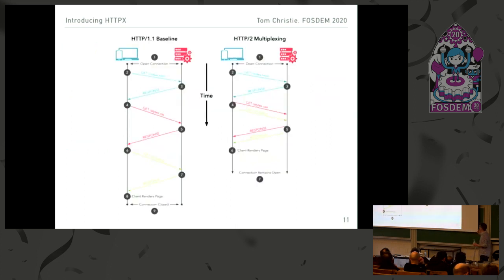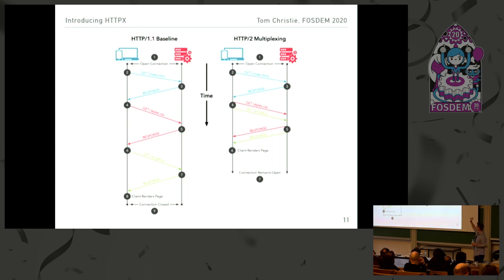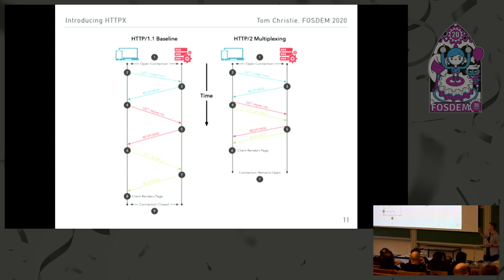Here's an example of the stream multiplexing. In this example it's a web browser making the request — it's fetching a web page that has a bunch of JavaScript and CSS associated with it. In the HTTP 1.1 case, each of the other resources we're downloading is downloaded sequentially. In HTTP/2 we can download them in parallel over the same connection. That's a slight simplification because in HTTP 1.1 you'll tend to open up more than a single connection, but even so, if you're downloading lots of resources at the same time, this is kind of what it ends up looking like.